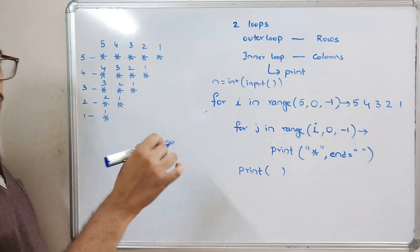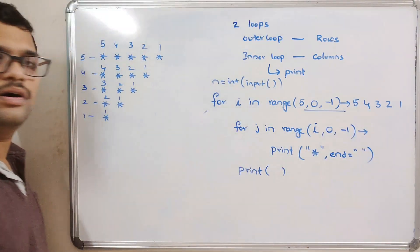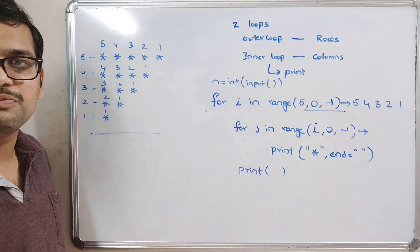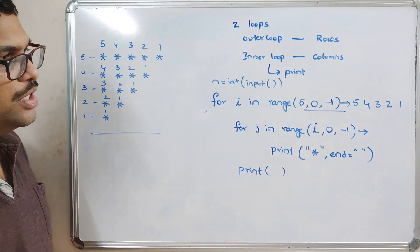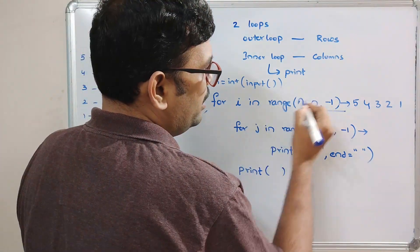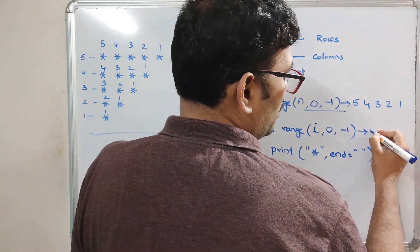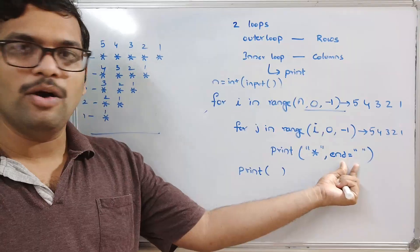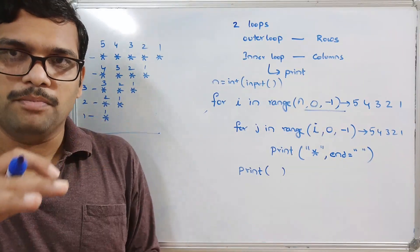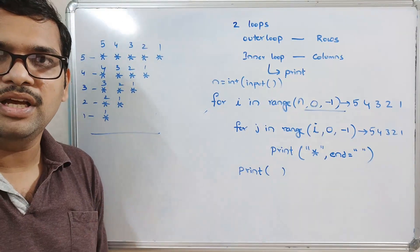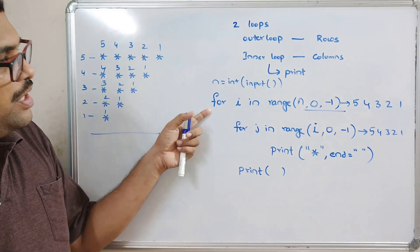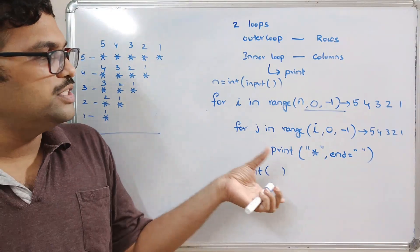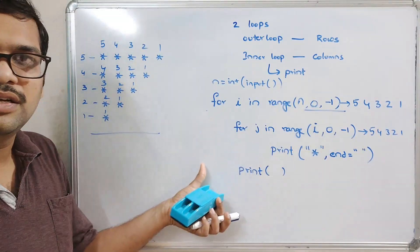We simply use the decrement operator in the range function, which gives the reverse pattern. Instead of hardcoding 5, use n — `range(n, 0, -1)` — for both loops. We still use the `end` parameter so all stars in a row print on the same line, and then the empty print moves to the next row.